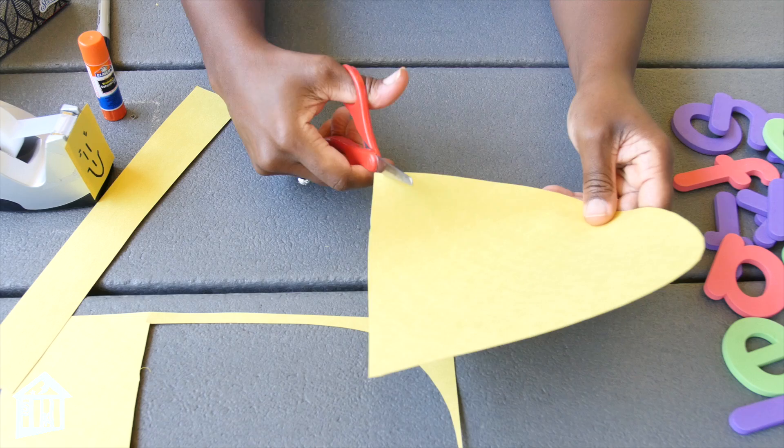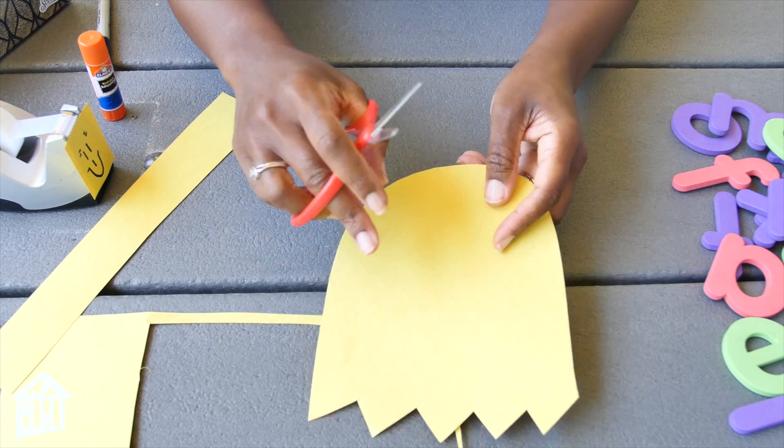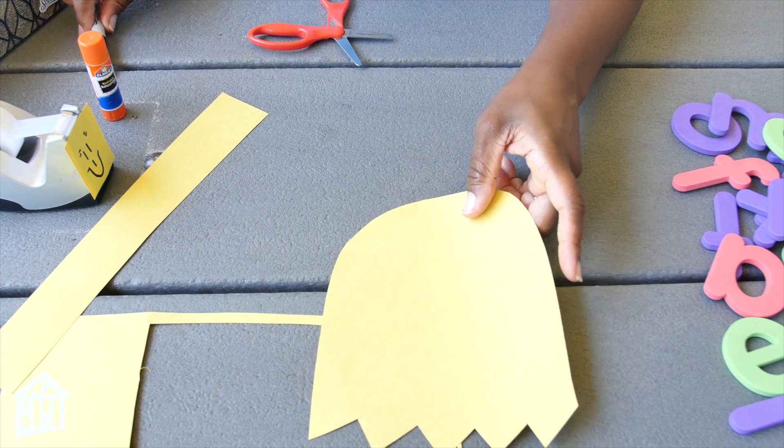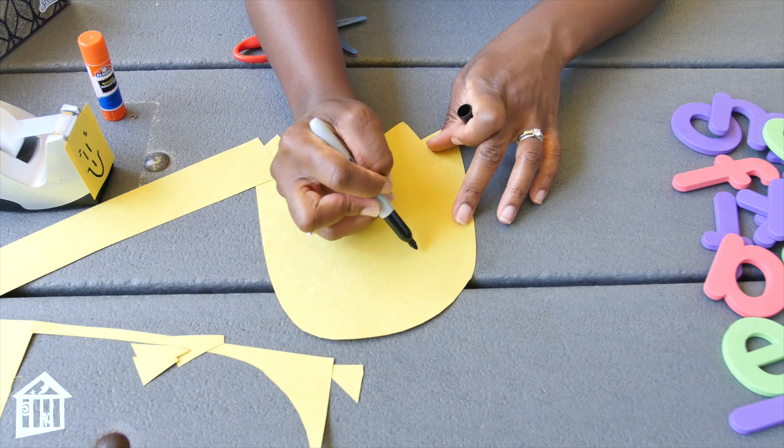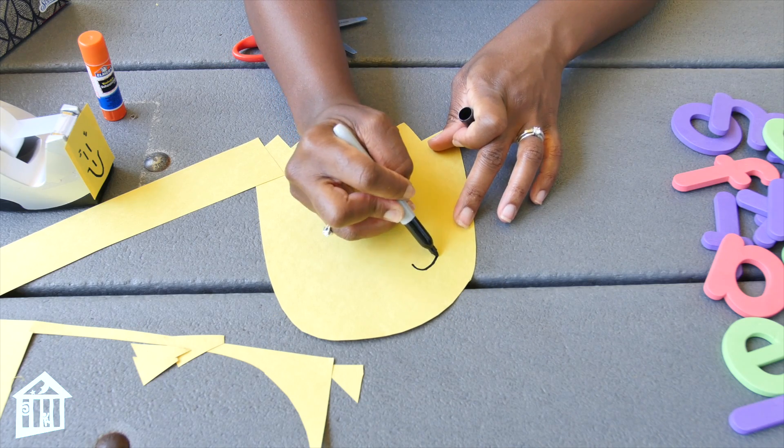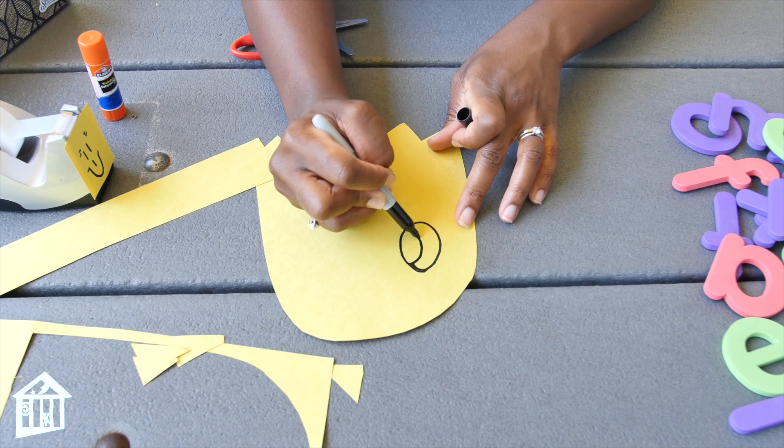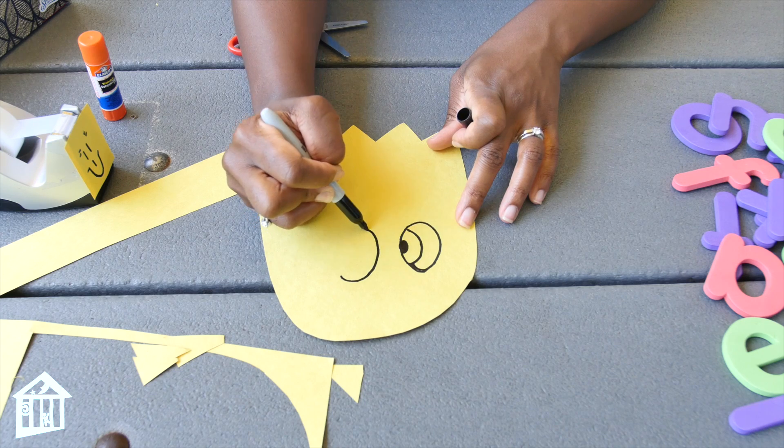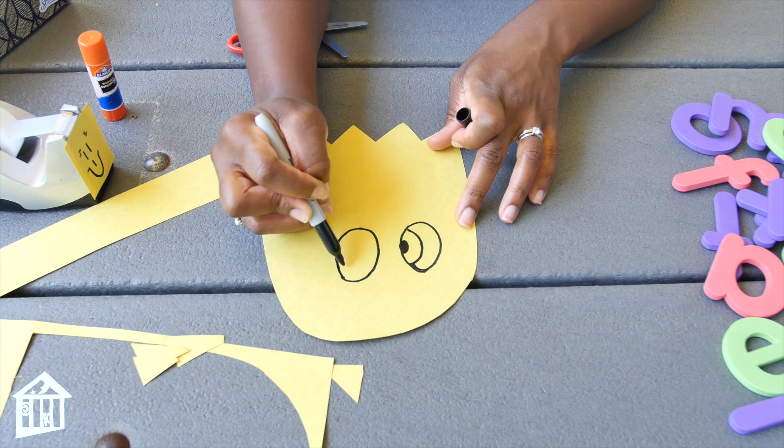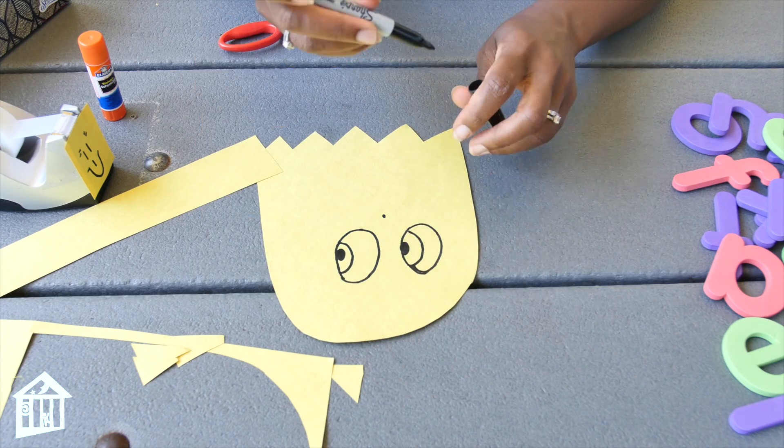I'm going to cut really quickly the bottom. So that part is simple. You can see my ghost starting to take shape. Now I'm going to draw some eyes and a nose just to give my ghost a little character, making sure that I leave some room for the mouth because I need to cut an opening.